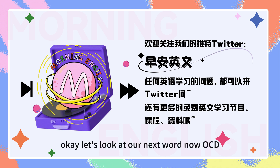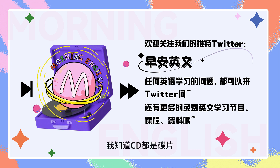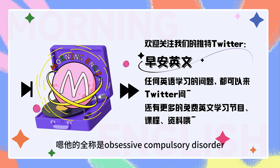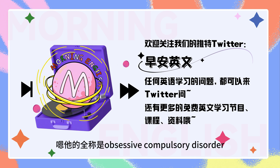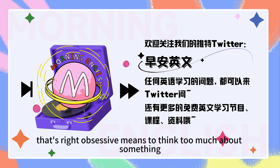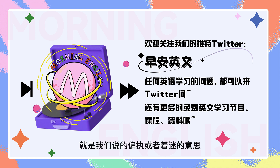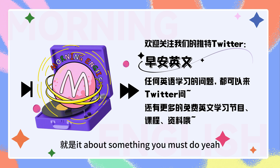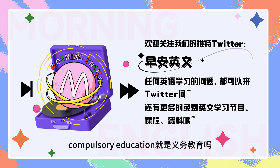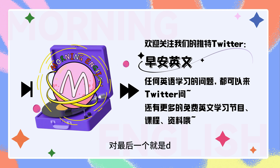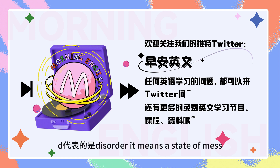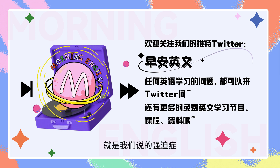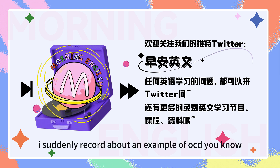Let's look at our next word now, OCD. Have you ever heard of OCD？我知道，就是强迫症嘛，对吧？它的全称是obsessive compulsive disorder。Obsessive means to think too much about something，就是偏执或者着迷的意思。第二个，C代表compulsory，就是about something you must do. 比如compulsory education，义务教育。最后一个，D代表disorder，it means a state of mess. 所以OCD指的就是强迫症。